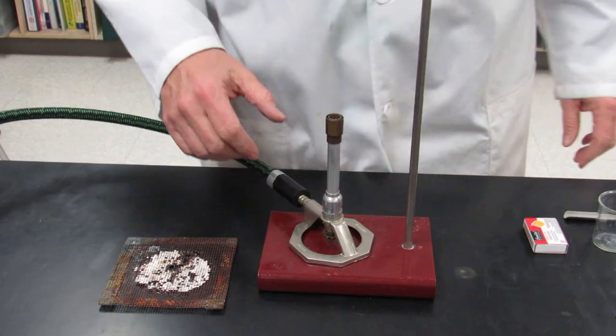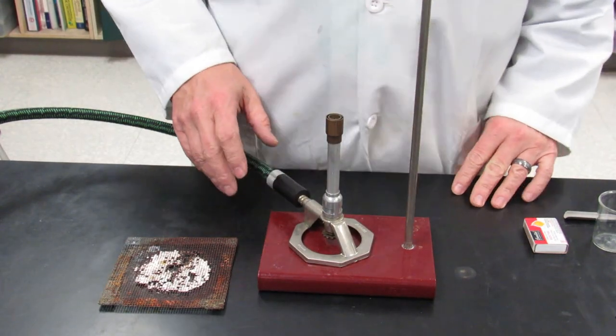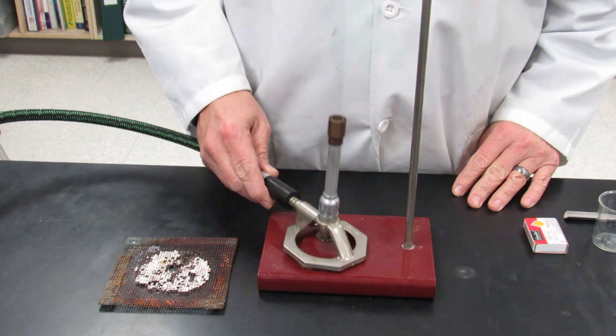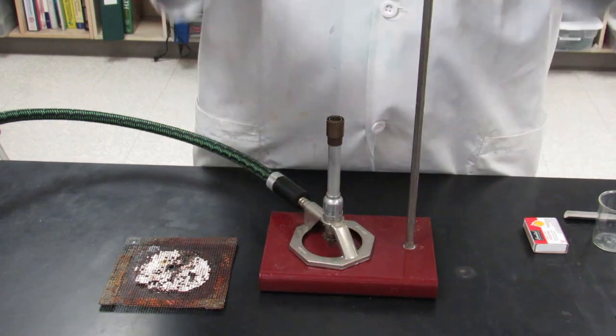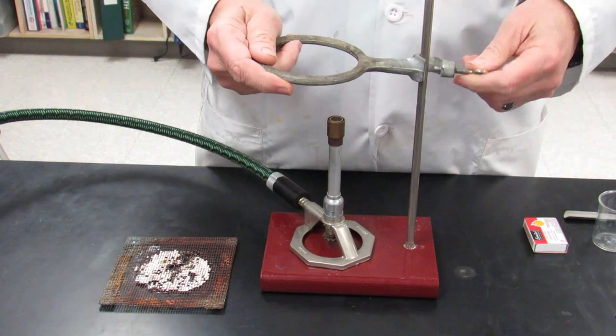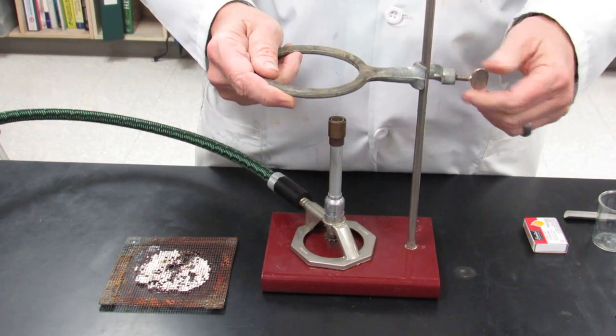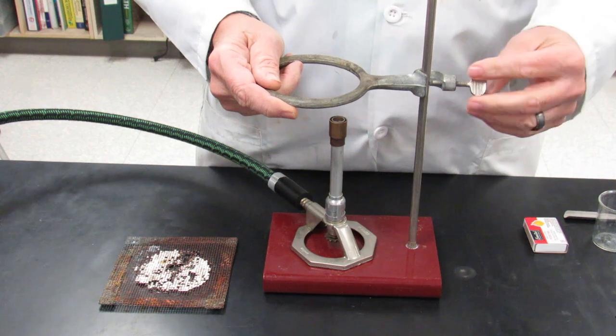It's time for the setup. We're going to take a Bunsen burner and place it on the ring stand. We're going to then take an iron ring and put it onto the ring stand, attaching the iron ring approximately two to three inches above the Bunsen burner flame.